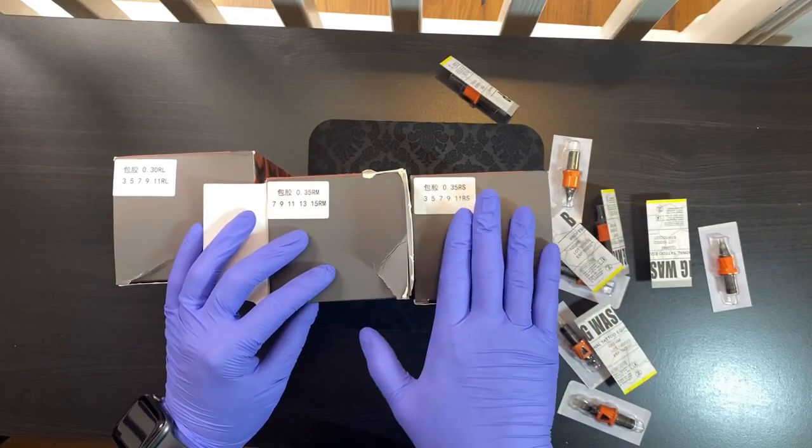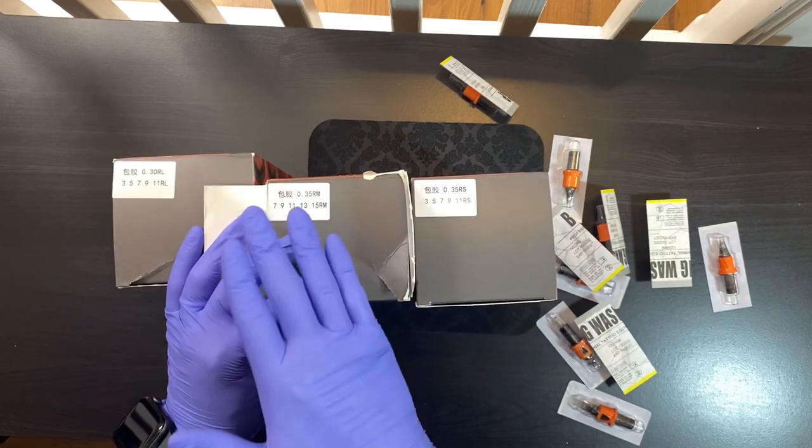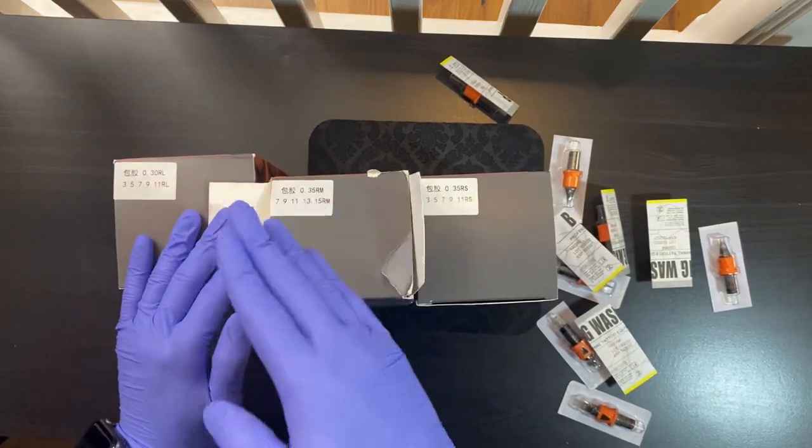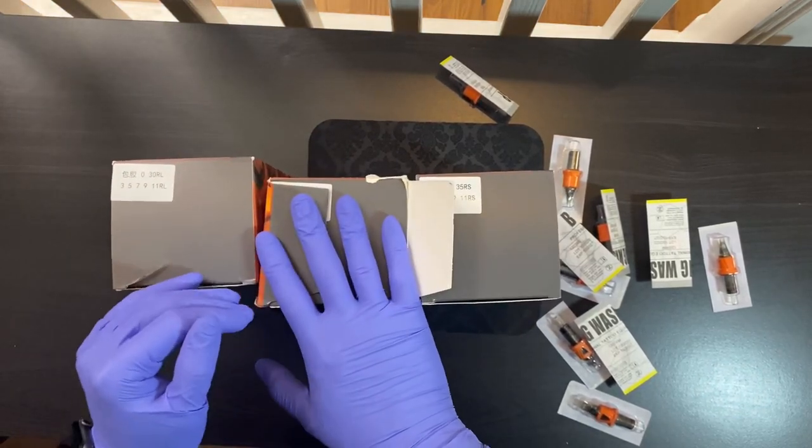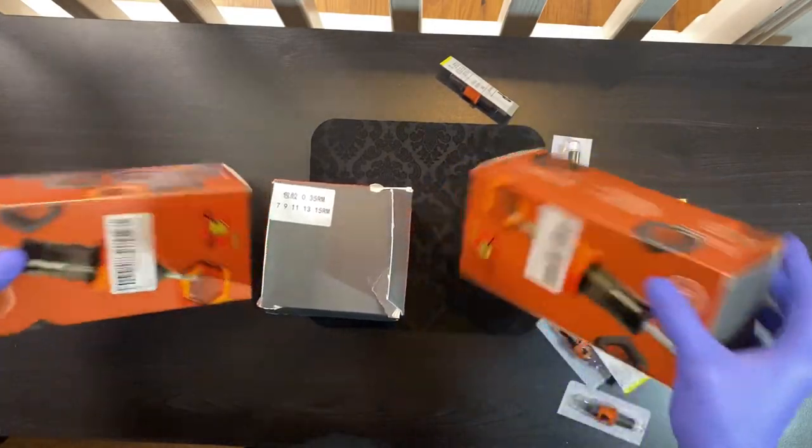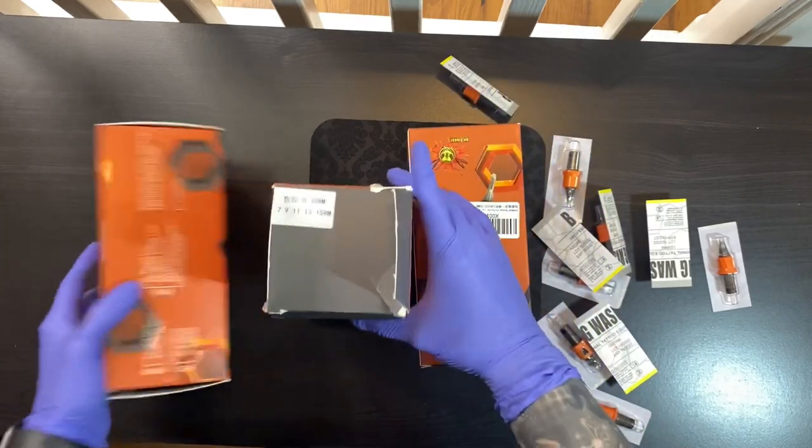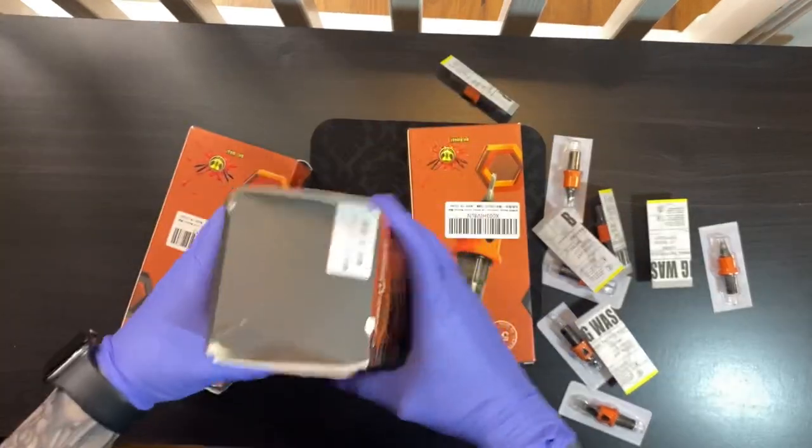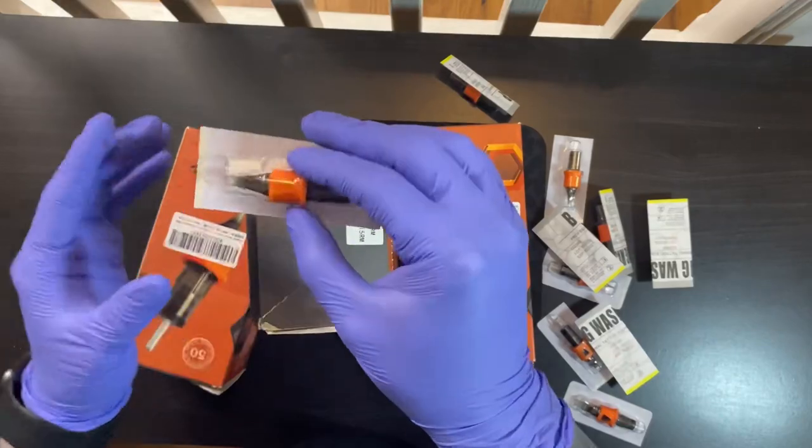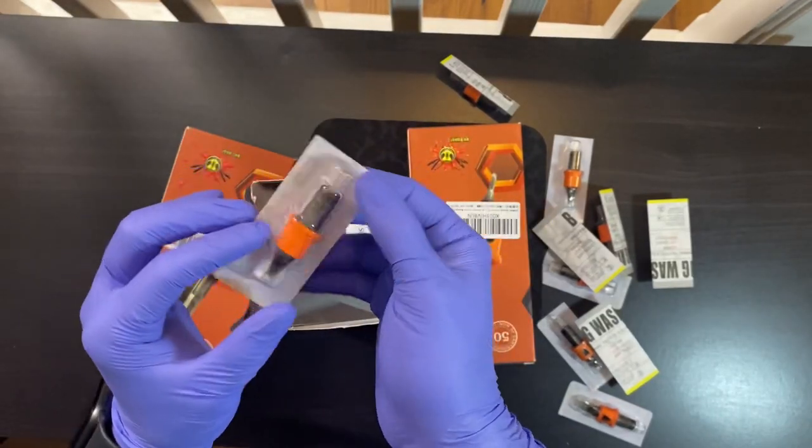The round shaders are really nice for bigger bold work. The round mags are great for gray wash and shading and packing black. The round liners are also super nice. I don't see any faults in any of these. I don't know exactly how much each box costs. Really nice, and there's a lot of work built into it. They're really clean and really nice.